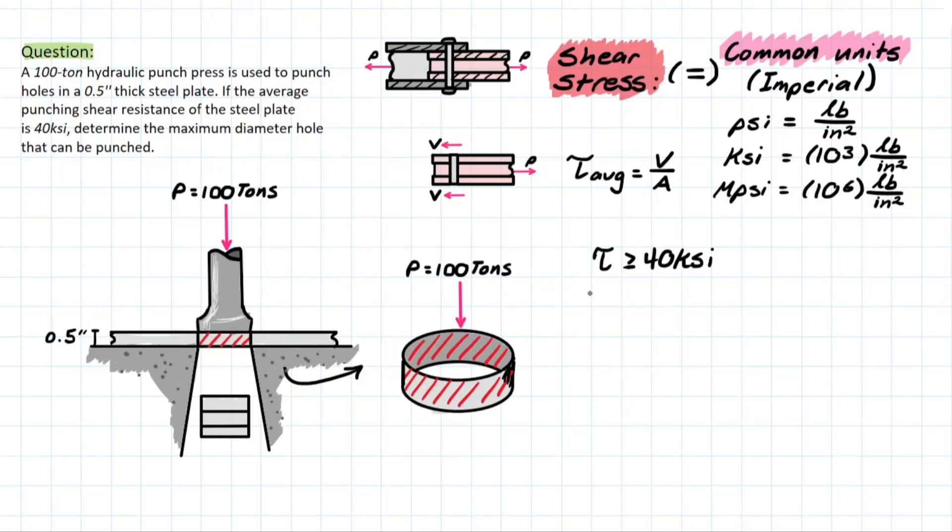The first thing I just want to do quickly is to define what one U.S. ton converts to in pounds. So, one U.S. ton is going to be 2,000 pounds. And in this problem, we have 100 tons, meaning that we're going to be left with 200,000 pounds as our numerator for this problem, as the shear stress, or the shear.